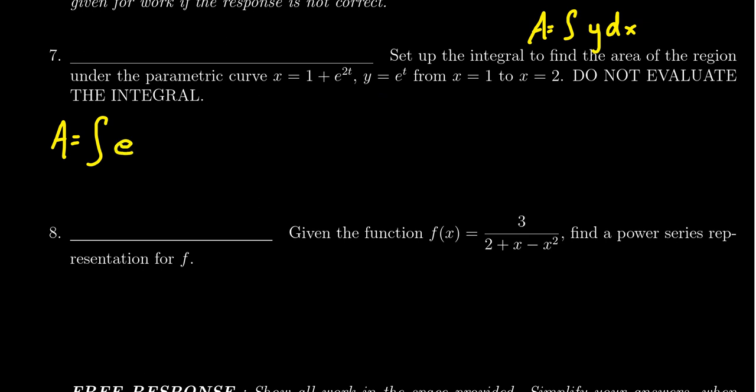We insert the y function as given, which gives us e^t. Then we insert dx by taking the derivative of x with respect to t, which gives us 2e^(2t) dt. So we have the y coordinate and the dx right there. That gets us most of the way.